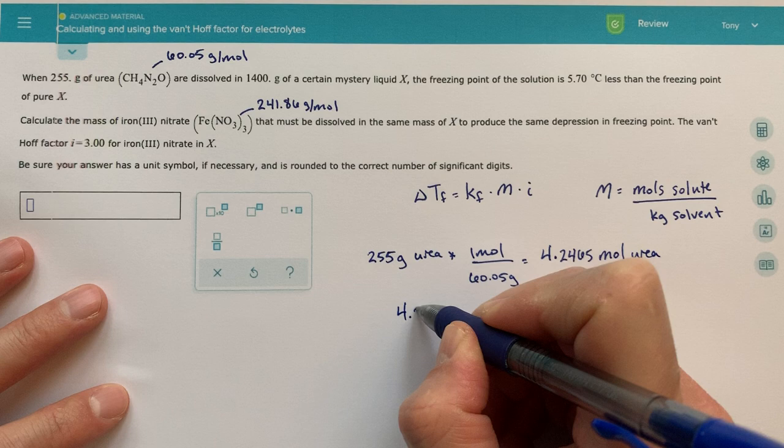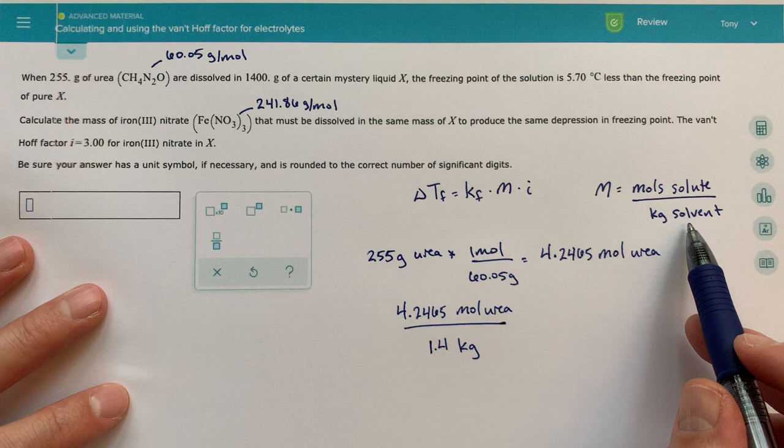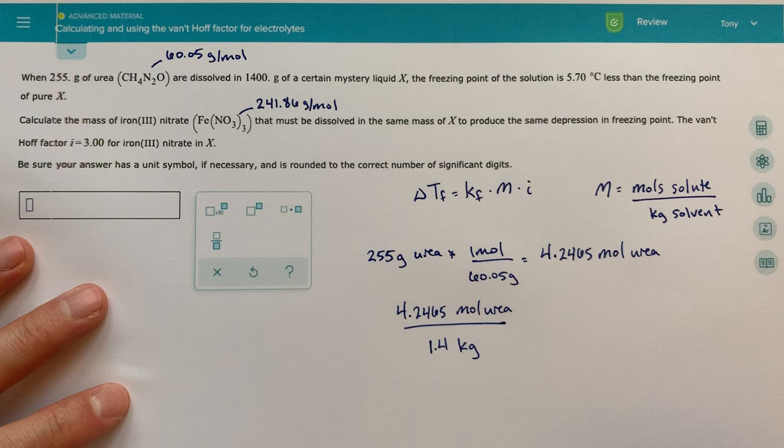And then I'm going to take that 4.2465 moles of urea and divide that by 1.4 kilograms. That is the mass of my solvent in kilograms. So we're seeing that right here, 1400 grams. We need to convert that to kilograms. A little tricky step there. Just make sure you're paying attention to that.